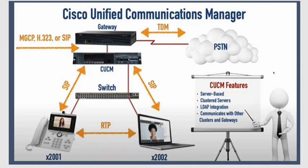To connect to the CUCM, let's say we have an endpoint device — this is an 8000 series phone with extension number 2001. Then we have another device, let's say this is a Jabber softphone, which is our DEX phone, and it has an extension of 2002. So 2001 needs to make communication to 2002.